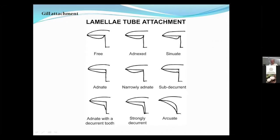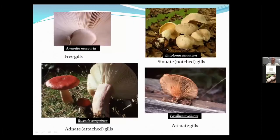Whole groups of mushrooms are identified based on gill attachment. In the genus Amanita, they have free gills — you can see a ring of tissue at the top of the stalk where the gills don't quite meet it. Some gills are slightly notched. In Paxillus, the gills run way down the stalk — there's hardly any stalk left because most of it's been taken up by the gills.